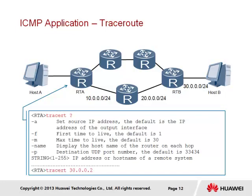Traceroute is another common application that employs ICMP echo messages to trace the path taken by data from source to destination. The TTL value is used to limit the range of the ICMP message to one single hop initially, which is incrementally increased. Once the TTL reaches zero, an ICMP message is returned to the source to determine the path and gauge the duration of transmission. Typically three ICMP messages are sent per hop before the TTL is incremented. The TTL starts at 1 by default, but the -f parameter can alter this, and the -m parameter can limit the range of the traceroute.